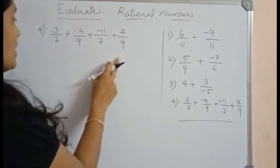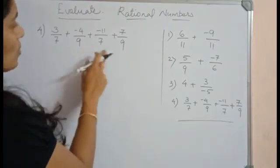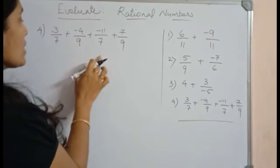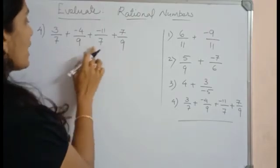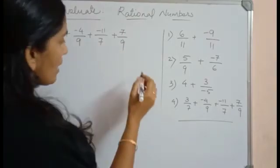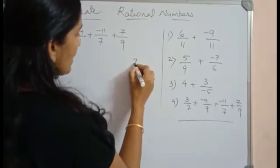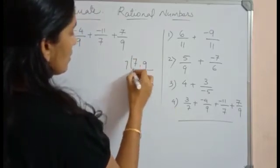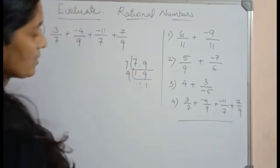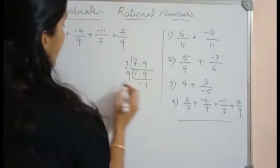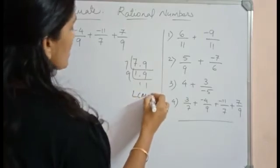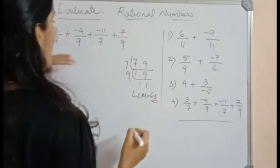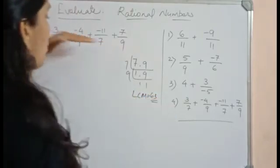Look at this question. Here we have 4 terms and the denominators are also different. So what we need to do is, the first thing we have to take the LCM of all these terms. Only 7 and 9 are there. So 7 and 9 are 63 will be your LCM. So LCM is equal to 63. The same way we have to make the denominator same.